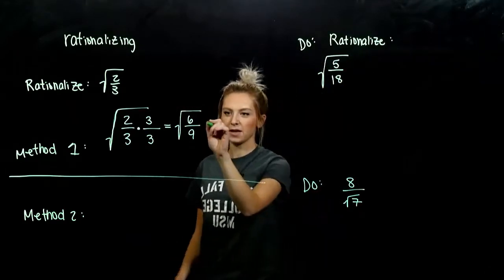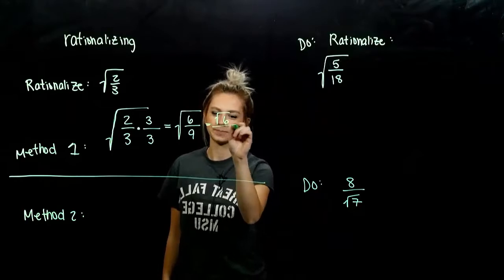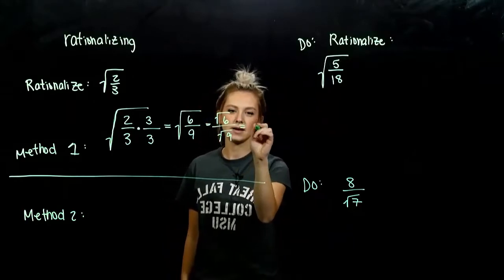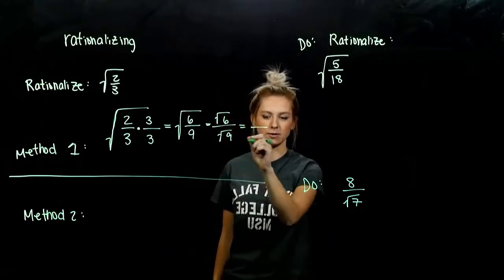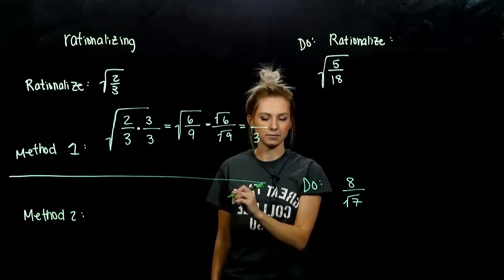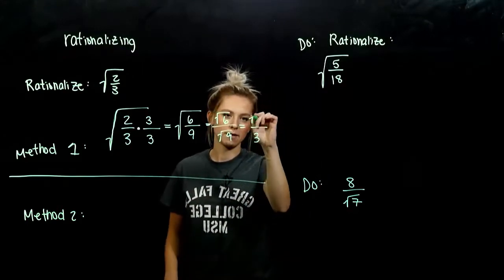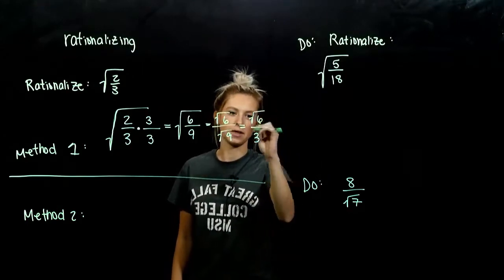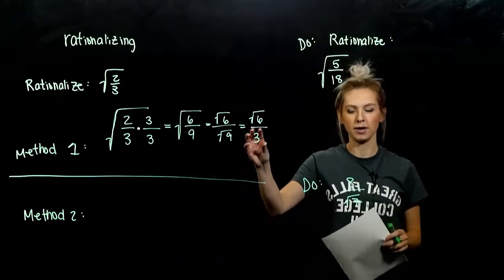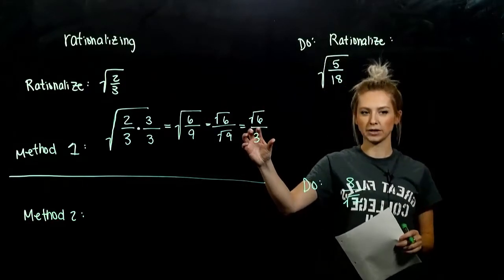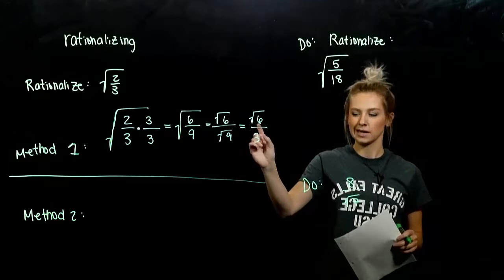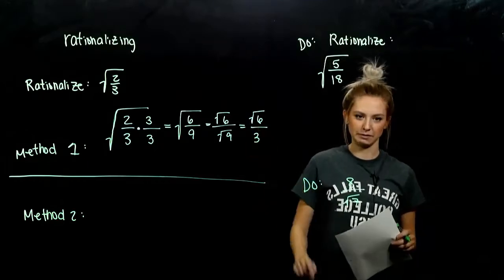We can evaluate them individually. The denominator evaluates out to three. Up top, we can still have a radical — we just care about the denominator being rational: a positive whole number, and it can't be zero down there.